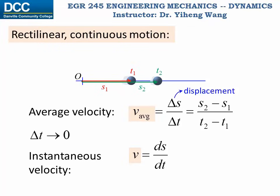From the previous video we've already learned that the average velocity is defined as the change in the object's position — the displacement — over the change in time, and instantaneous velocity is the time derivative of the position function.